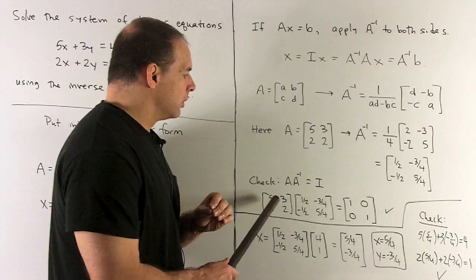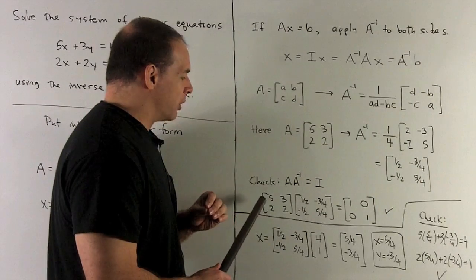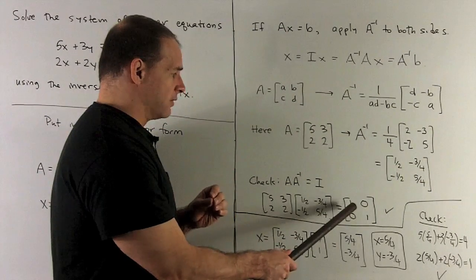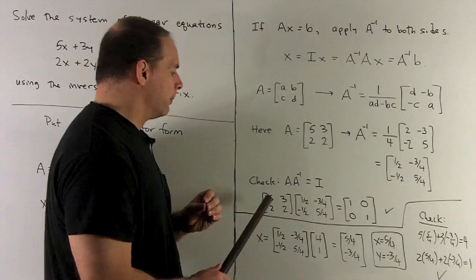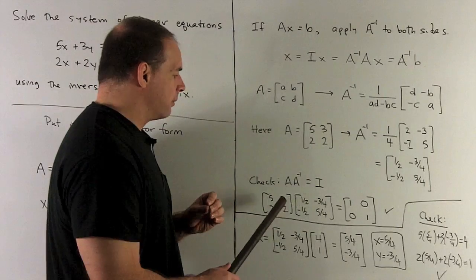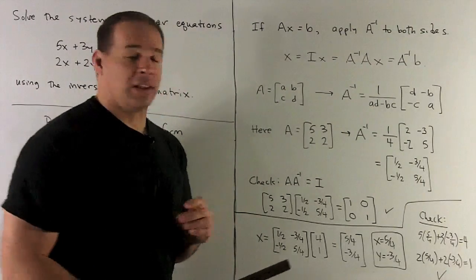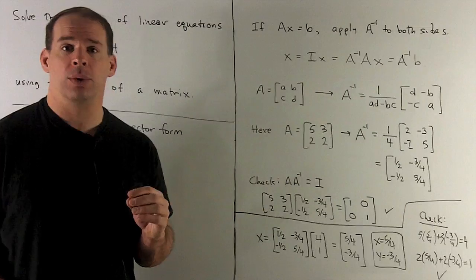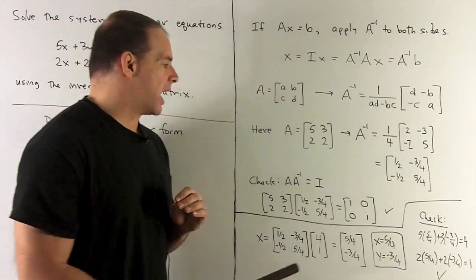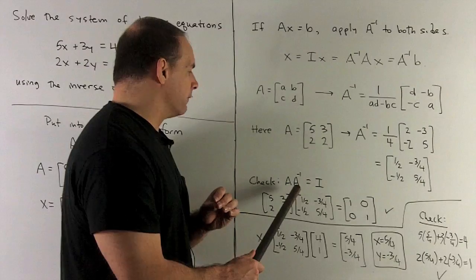When we do that check and follow through the matrix multiplication, for the upper left-hand corner entry we get 5 times one half plus 3 times minus one half, which gives 2 over 2, giving us a 1. The rest works out to give the identity, confirming our inverse is correct.